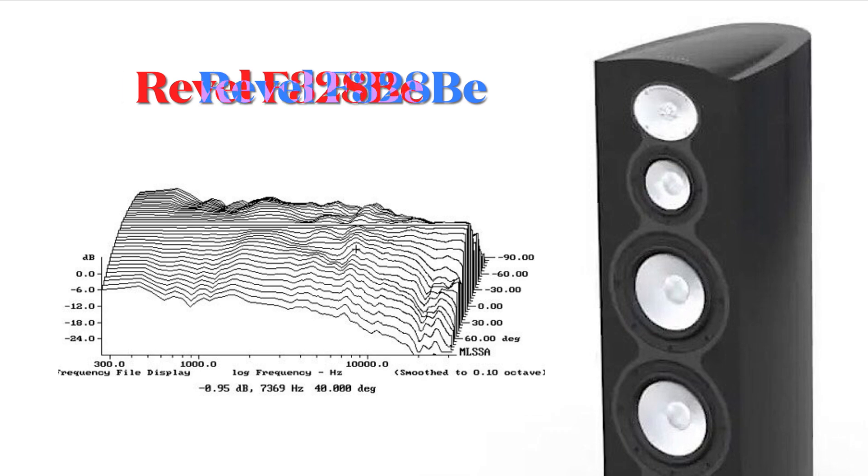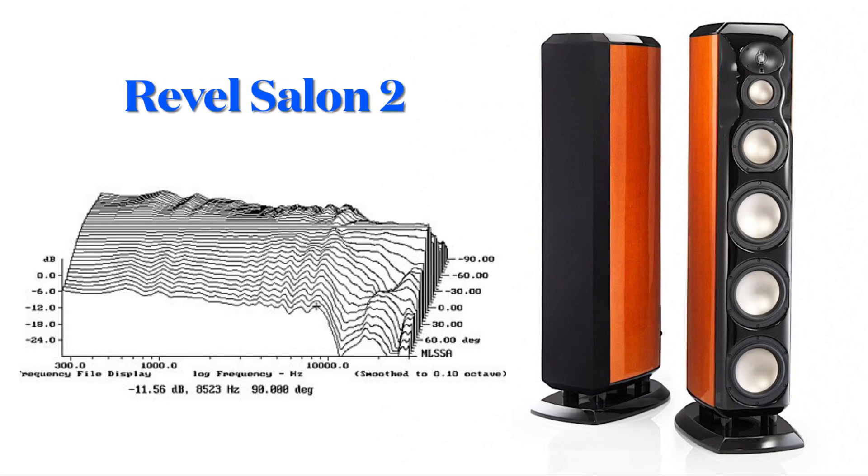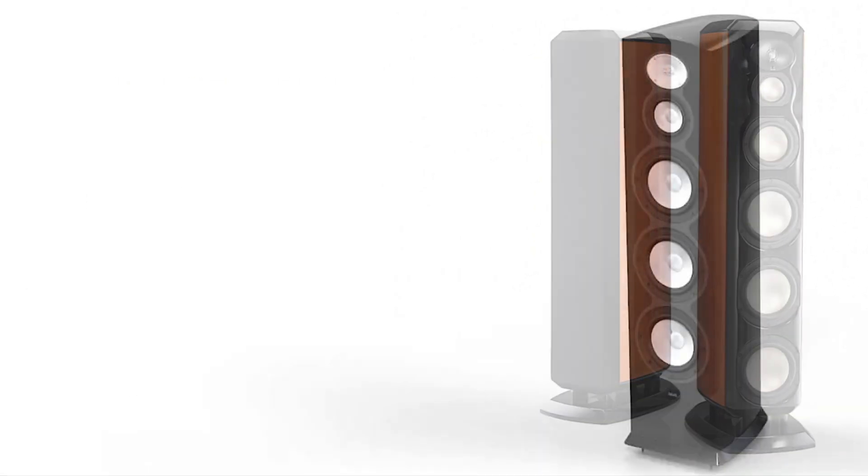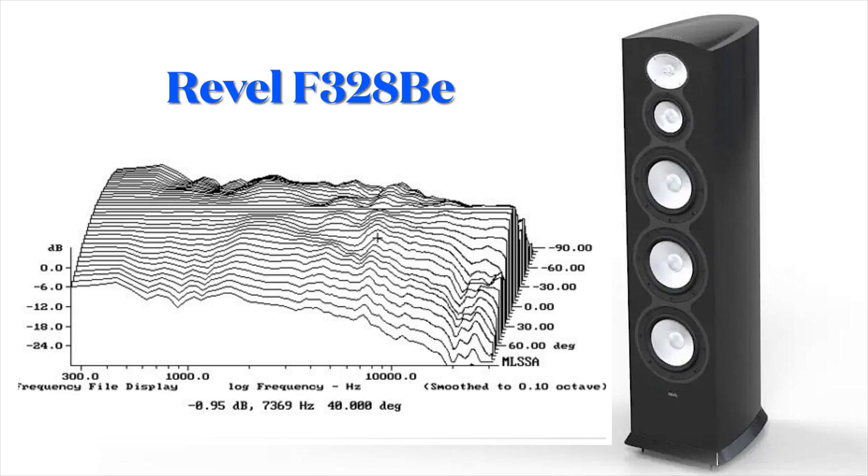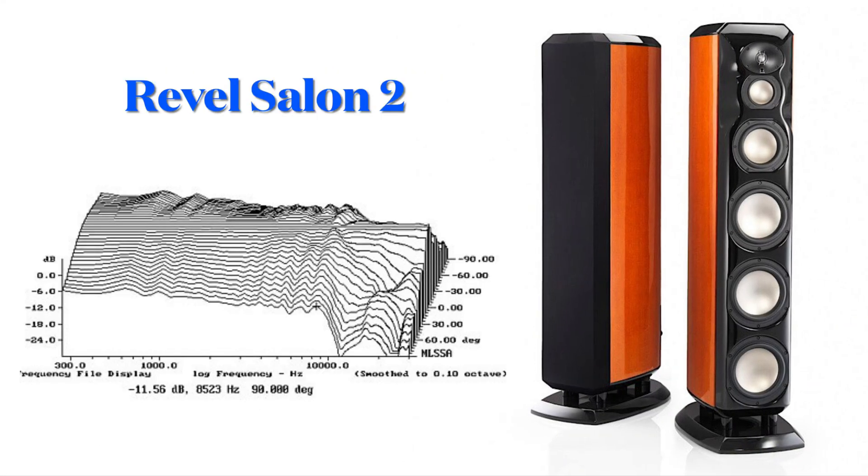Waveguide design is one of the techniques used to optimize this and control the smooth off-axis performance. Here you can see Revel Salon 2 using their third-generation Waveguide versus Revel F328BE speakers using their sixth-generation Waveguide design. The latest F328BE shows much better treble directivity behavior than Salon 2.